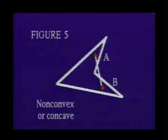The polygons in figures 1 through 4 are said to be convex polygons, because if any two points in the interior of each are joined by a line segment, all points of the line segment will lie in the polygon's interior. Notice in Figure 5 this is not the case.